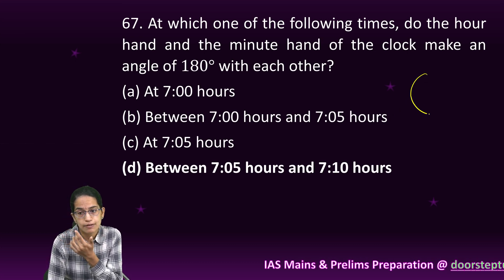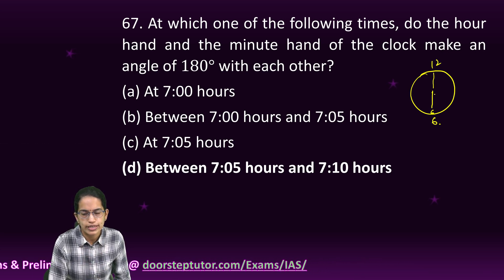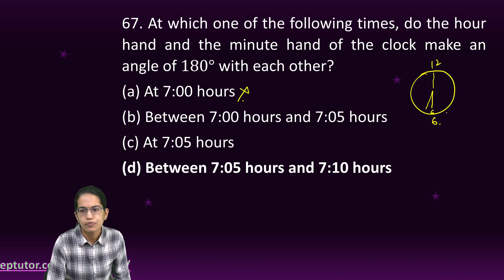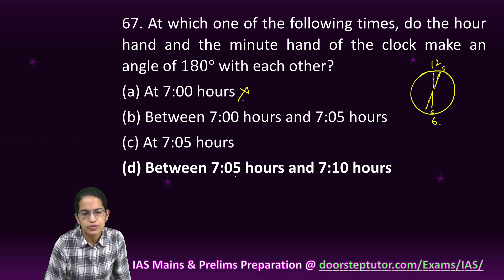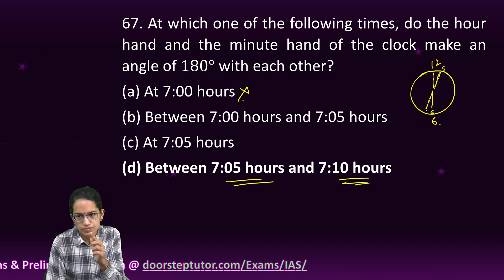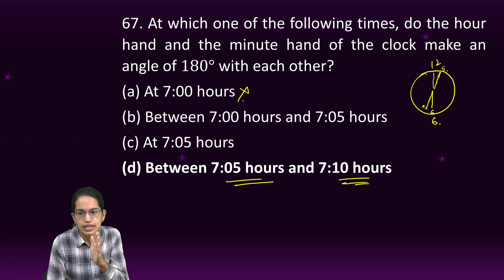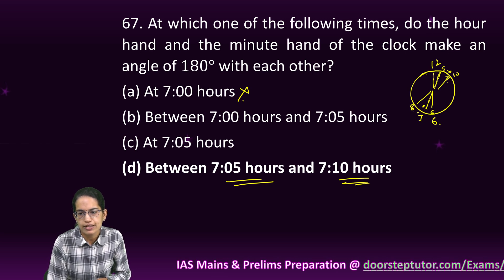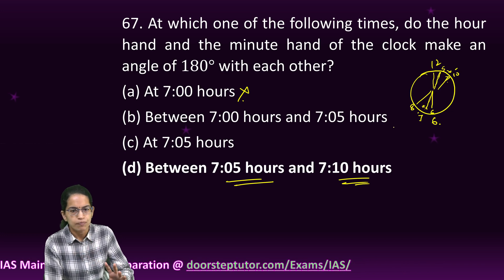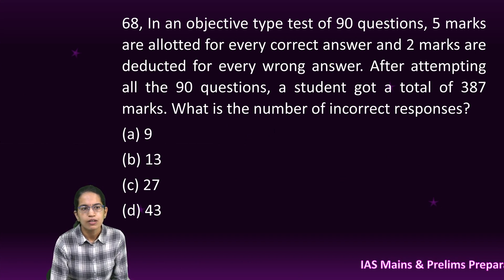The next question asks at which time the hour and minute hands make an angle of 180 degrees. Between 6 and 12 it is exactly 180 degrees. Between 7 and 12 it cannot be 180. When it is the minute hand, it would be somewhere a little away from 5 because the hour hand shifts a little from 7. So between 7 and 8 would be the hour hand and the minute hand would be between 5 and 10, therefore D becomes the right option.